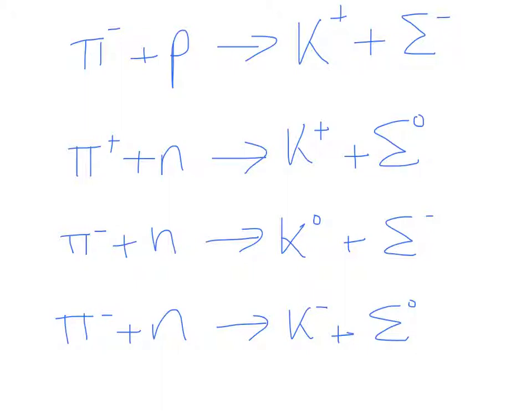Non-strange particles, things like proton, neutron, pi-mesons, leptons were assigned zero strangeness. The strangeness numbers for other strange particles and antiparticles can then be deduced from the observed reactions.